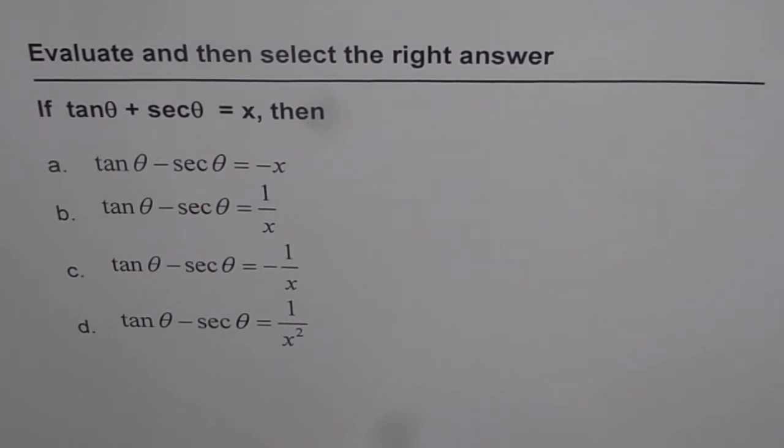If tan theta plus secant theta equals to x, then which one of these statements is true? tan theta minus secant theta equals to minus x, or tan theta minus secant theta equals to 1 over x, or tan theta minus secant theta equals to minus of 1 over x, or is it 1 over x squared?